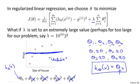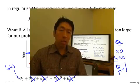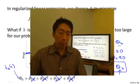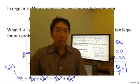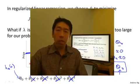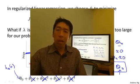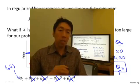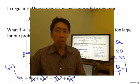So for regularization to work well, some care should be taken to choose a good choice for the regularization parameter lambda as well. When we talk about model selection later in this course, we'll talk about a variety of ways for automatically choosing the regularization parameter lambda. That's the idea behind regularization and the cost function we'll use. In the next two videos, let's take these ideas and apply them to linear regression and to logistic regression so that we can get them to avoid overfitting problems.